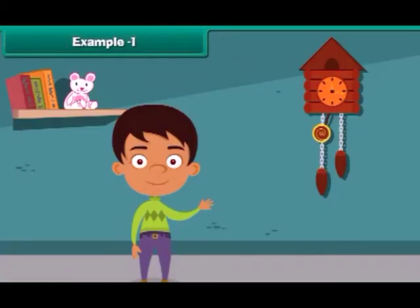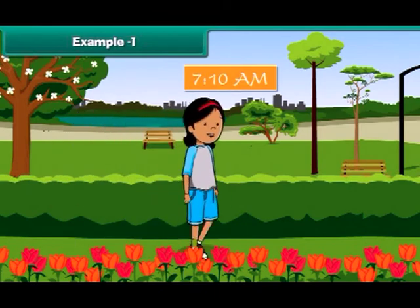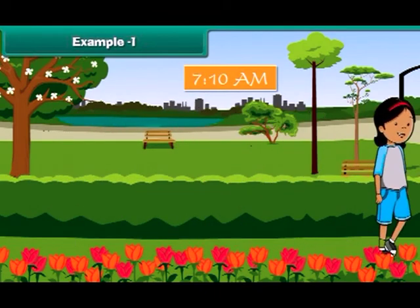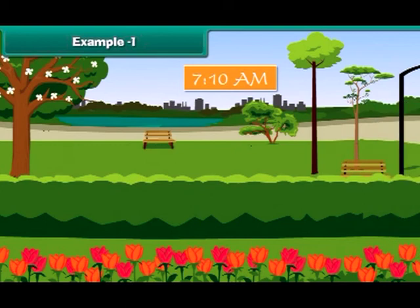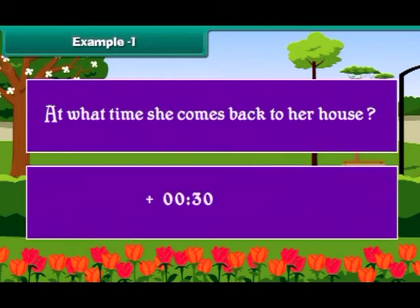Let us solve some interesting problems on time. Sara goes for her morning walk at 7:10 AM. She walks for half an hour. At what time does she come back to her house? To find the answer, we need to add 30 minutes to 10 past 7. The time will be 7:40 AM.